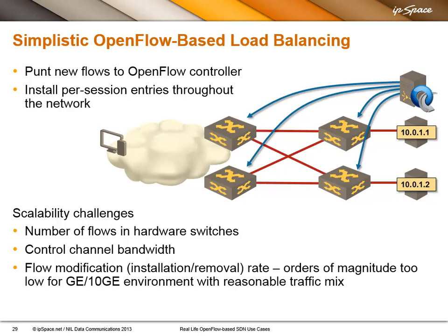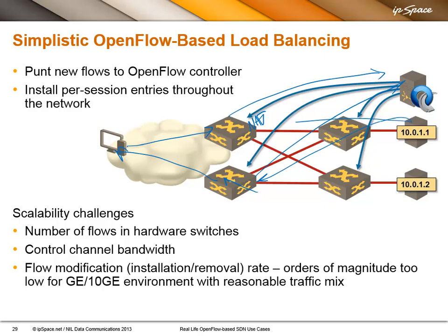Some academics are trying to solve that problem by saying: we'll do flow-based forwarding in the switches. When the first packet comes in, it hits whatever switch, and the switch punts the first packet of the flow to the controller. The controller will install what is effectively a NAT entry in that box, and we're done. Of course, the return traffic might hit the other box, at which point that box will punt the traffic to the controller. The controller will reinsert another forwarding entry with a reverse NAT entry so that the return traffic goes to the client. And then if there is a topology change and traffic starts arriving at a different box, the first packet will be punted to the controller, the controller will install the NAT entry, and so on.